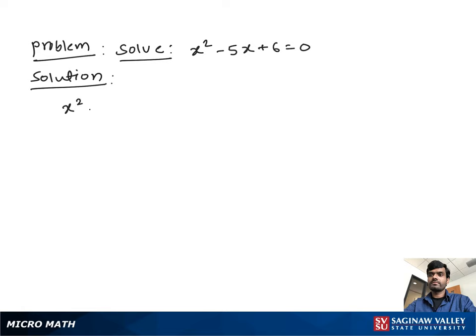Solve x square minus 5x plus 6 equal to 0. So what to do first, we find out the factor of this quadratic equation.